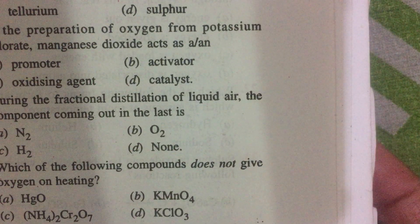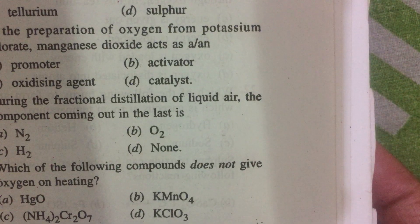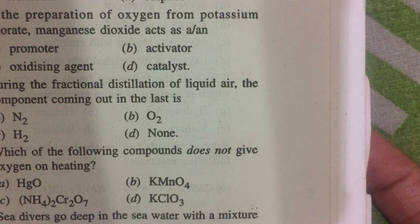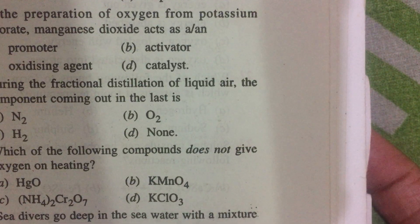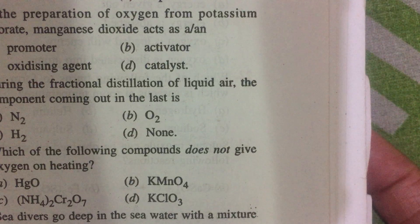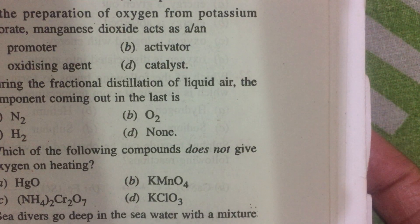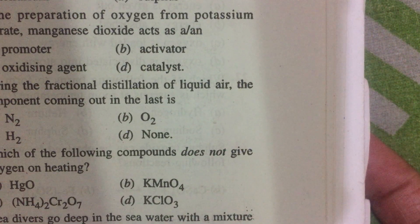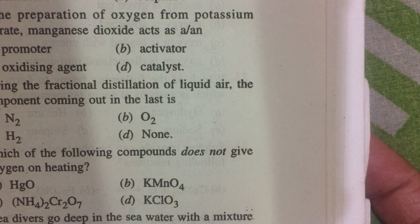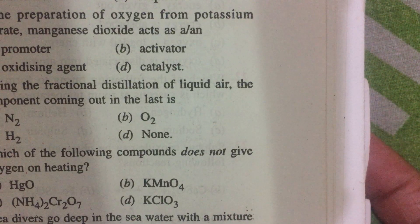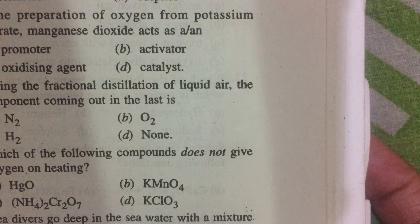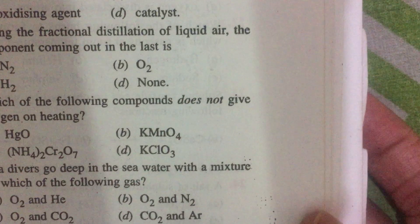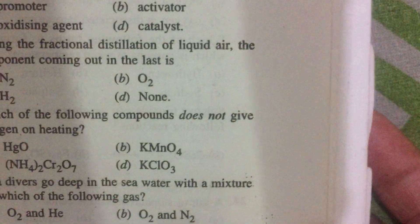Which compound does not give oxygen on heating? Ammonium dichromate, NH4Cr2O7, on heating gives nitrogen gas, water vapors, and Cr2O3 as a green powder — it is a method to prepare nitrogen, not oxygen. Mercuric oxide on heating gives oxygen — this material was first heated by Lavoisier and Scheele to obtain oxygen. KMnO4 and KClO3 also give oxygen on heating.